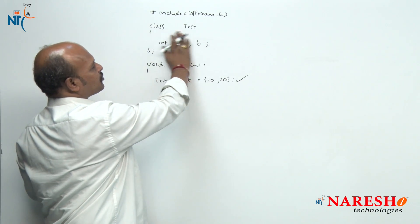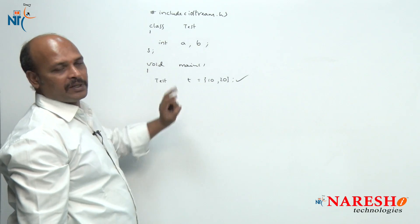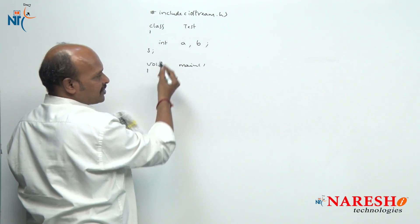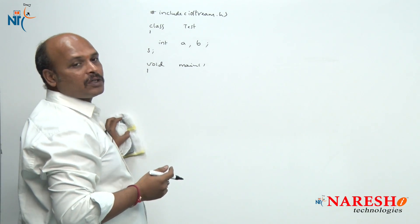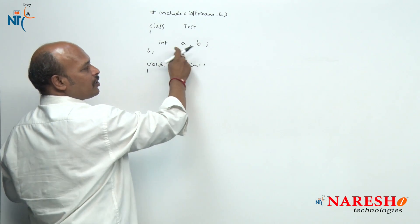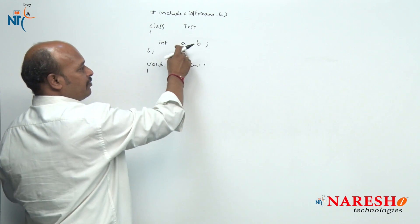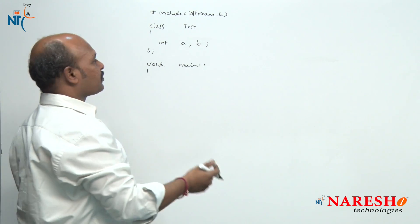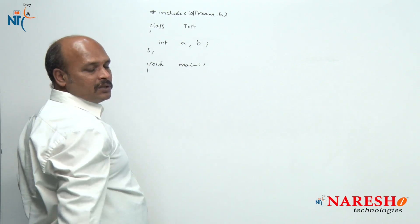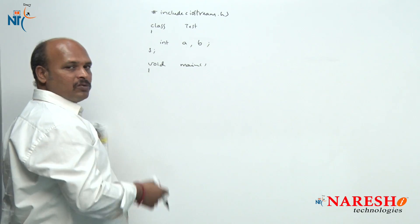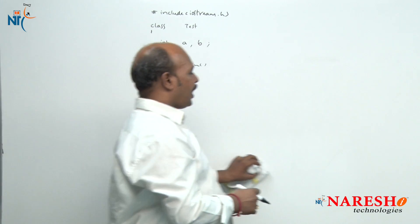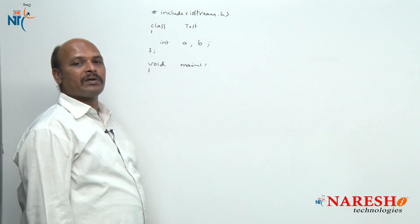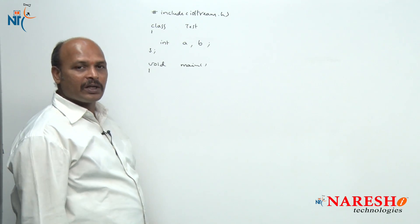Suppose you just declare `int a, b` and do `cout a` and `cout b` — they will give garbage values because there is no initialization. Whenever there is no initialization, the data members hold garbage values. The key point is: I want to initialize the data members without explicitly calling a member function.